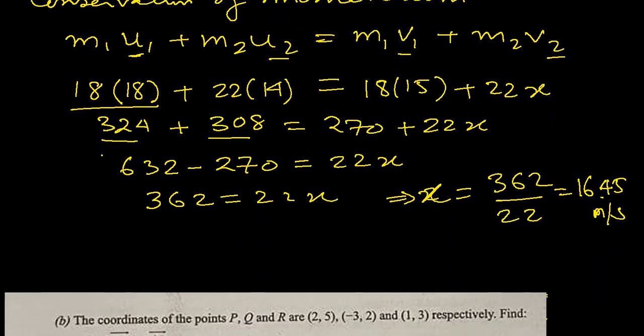Let's move on to part b of the same question, which is: the coordinates of the points P, Q, R are given respectively, find 2PQ plus 5QR. We will have to first find PQ.